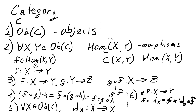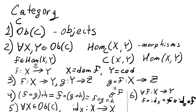One thing I forgot to mention is that if we have a morphism F from X to Y, X is called the domain or source of F, and Y is called the co-domain or target of F.